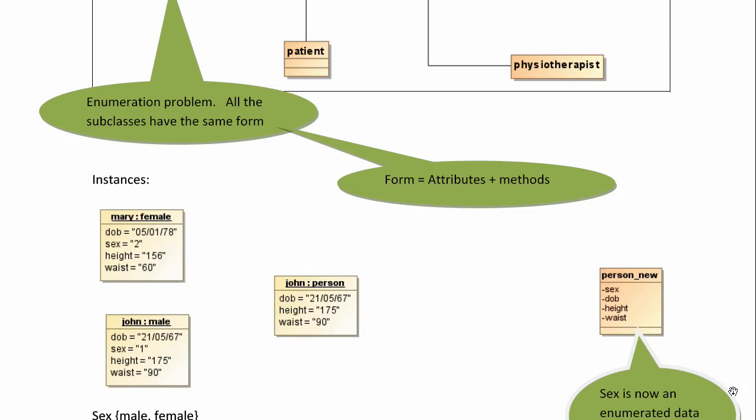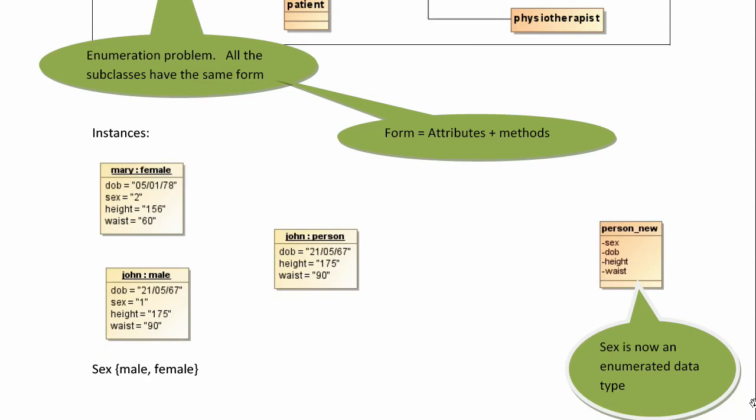The only two attributes that male and female are adding to the superclass person is sex. Class female has a sex value of two and male sex value of one. Really, what we've done is just taken one attribute and given them a particular value to distinguish them, and that's all. My enumerated data type is here's an example which we call sex, and it can take two values male or female.